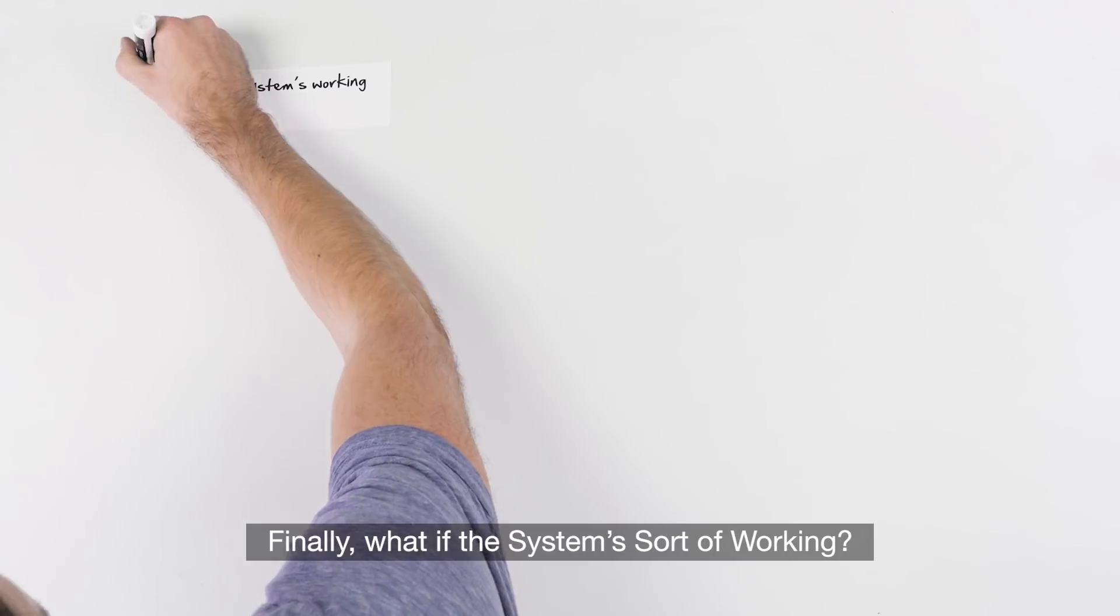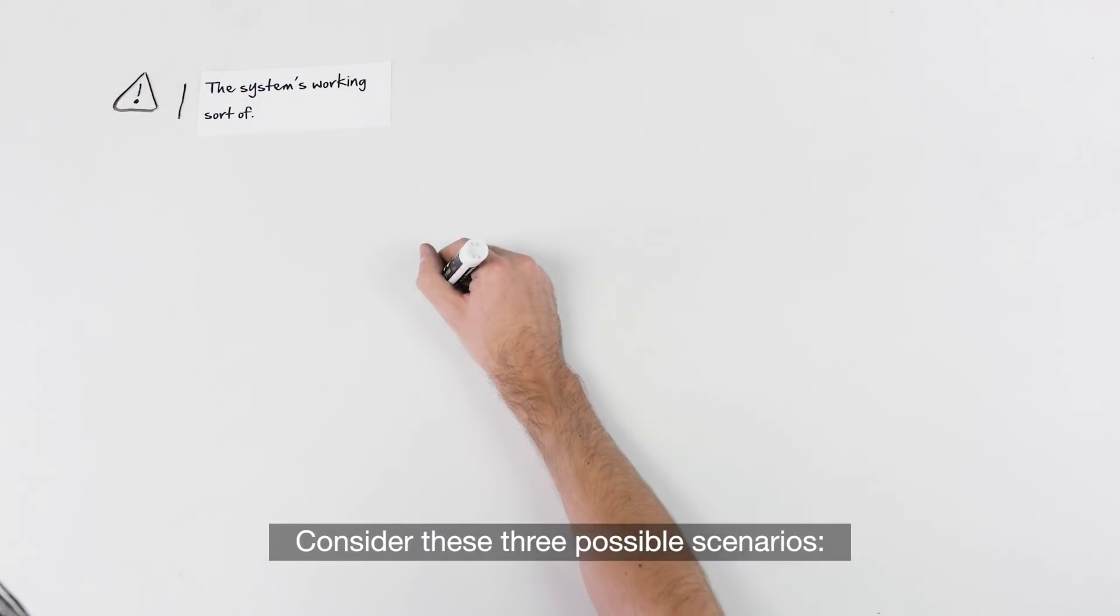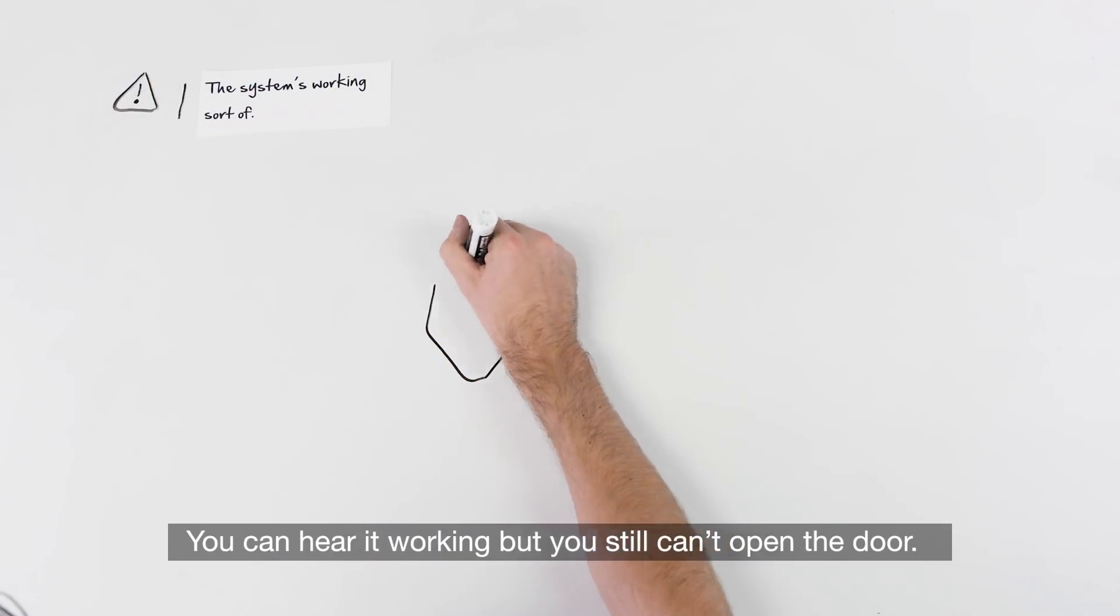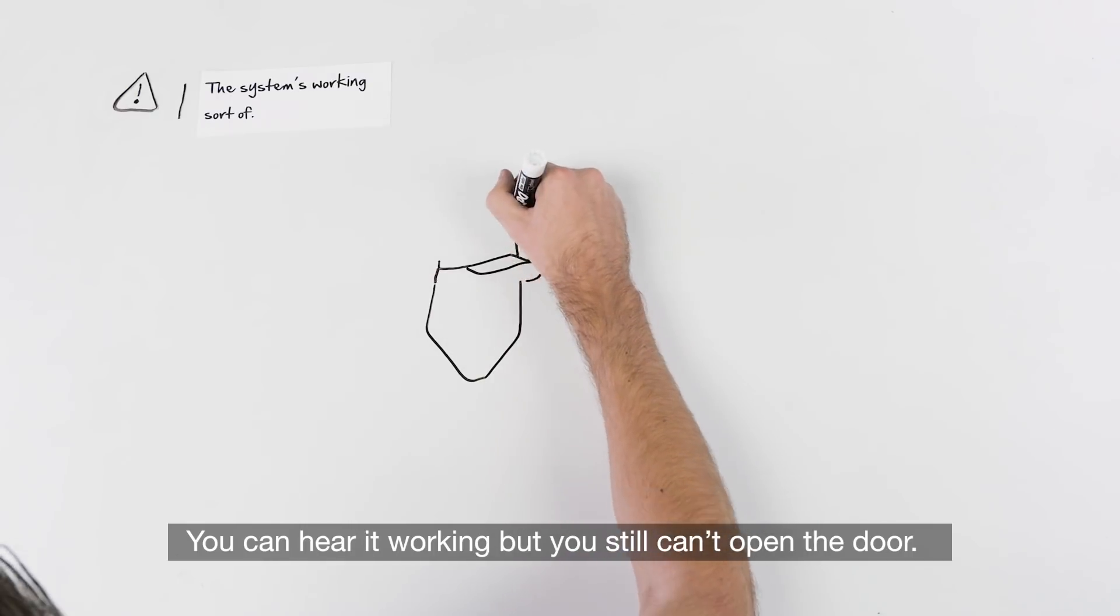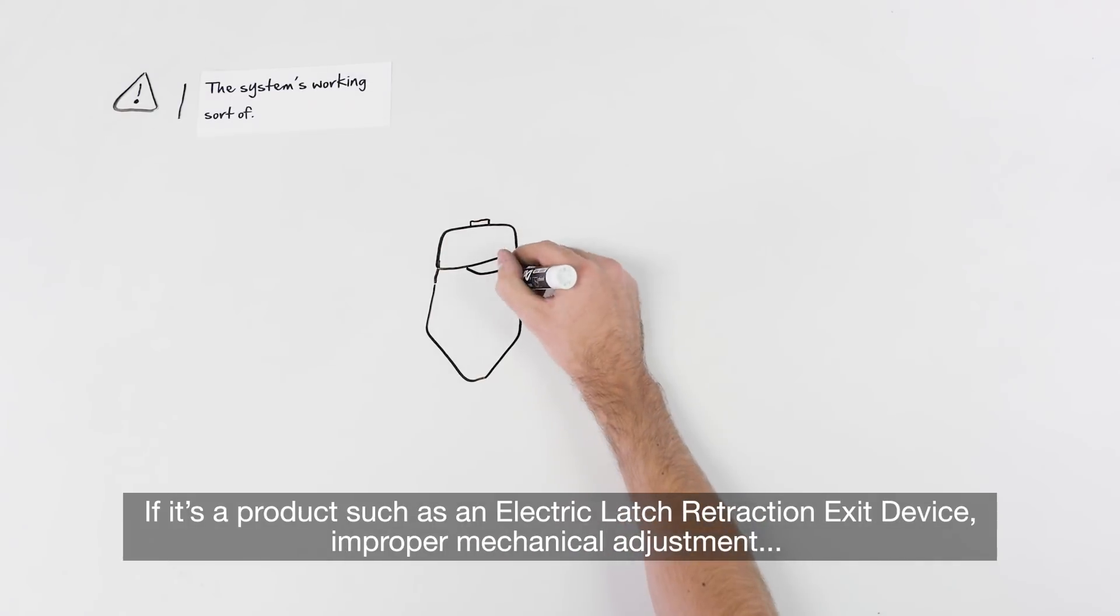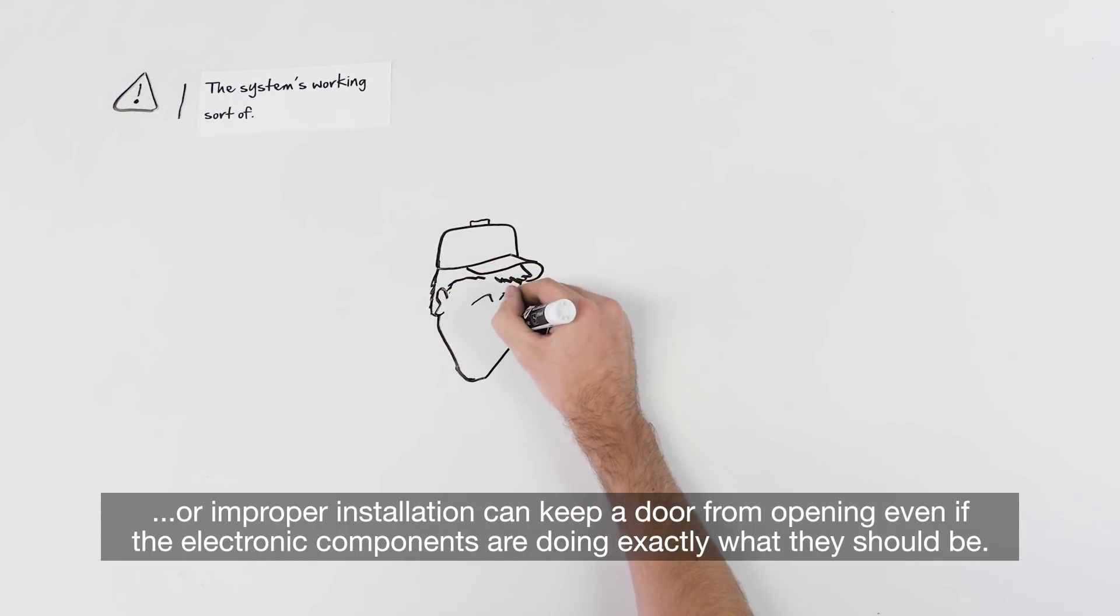Finally, what if the system is sort of working? Consider these three possible scenarios. You can hear it working but you still can't open the door. If it's a product such as an electric latch retraction exit device, improper mechanical adjustment or improper installation can keep a door from opening even if the electronic components are doing exactly what they should be.